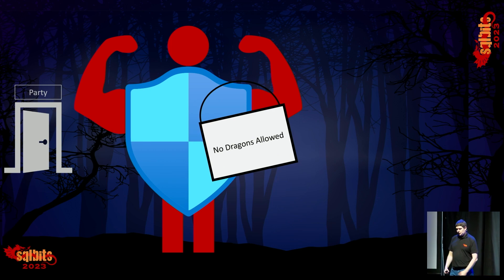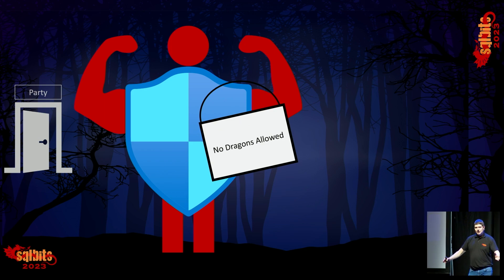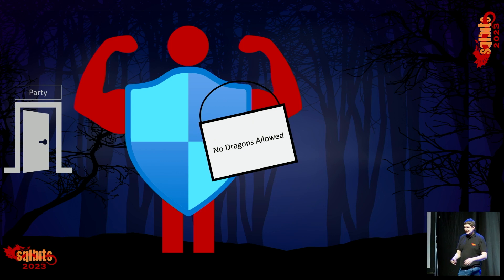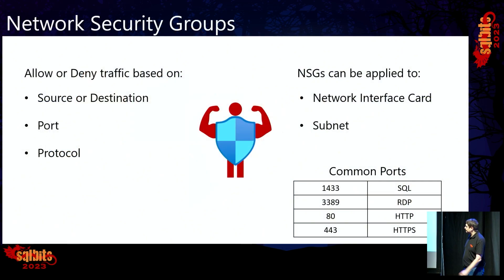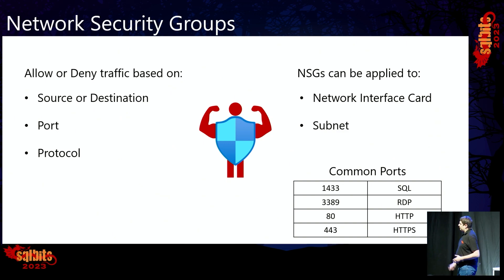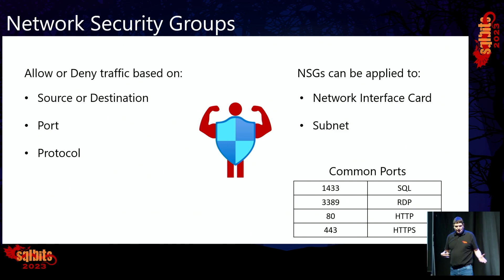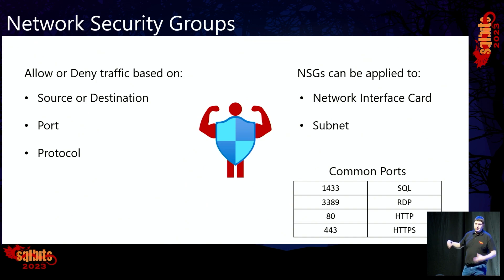We can think about virtual networks as being a gated community. Everybody within that community can talk to each other — they're all trusted, all friendly. The NSGs are the doorman on the house, or on the individual streets within that gated community, should we want that. With NSGs, we can allow or deny traffic based on source and destination IP addresses, a specific port, or a specific protocol — such as TCP or UDP.